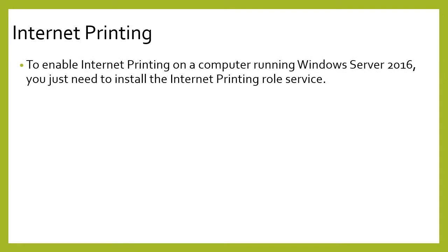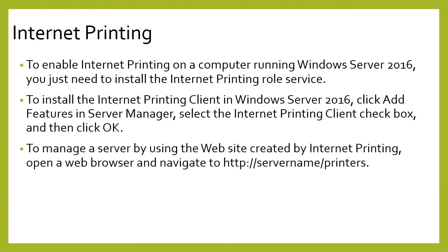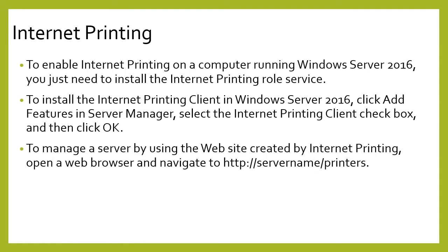We can also engage what we call internet printing. In order to enable internet printing on Windows Server 2016, you need to install the Internet Printer role service. To install the Internet Printing client, you simply add the feature in Server Manager, select the Internet Printing Client checkbox, and click OK. To manage a server using internet printing, open your web browser, navigate to the server name and printers path, and you will be able to print from the internet.